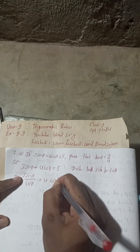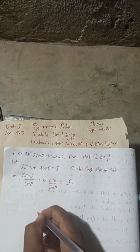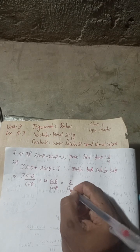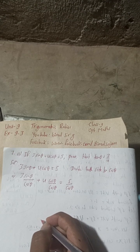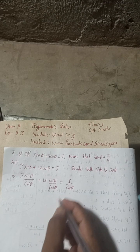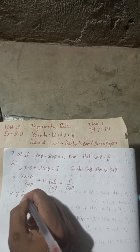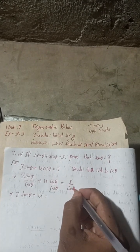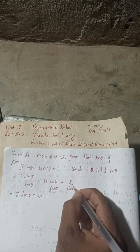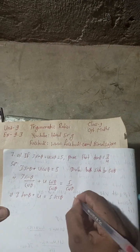After dividing both sides by cos θ: 3 sin θ / cos θ is tan θ, and 4 cos θ / cos θ gives 4. So we get 3 tan θ plus 4 equals 5 times (1/cos θ). Now 1/cos θ is sec θ, so this becomes 3 tan θ plus 4 equals 5 sec θ.